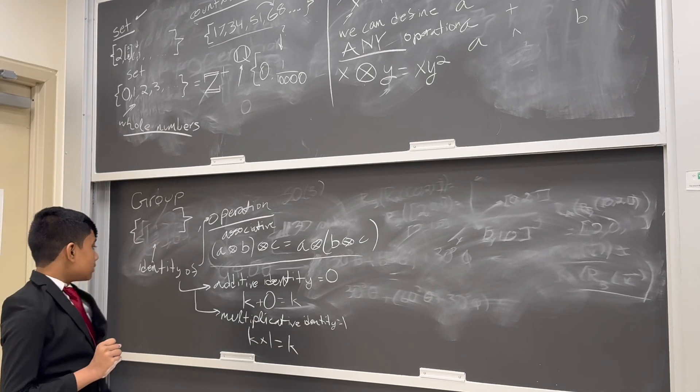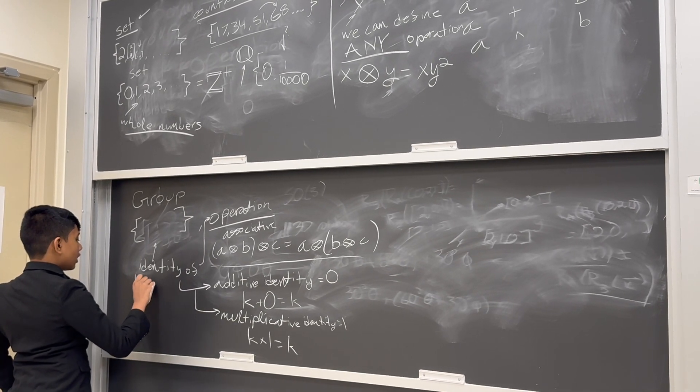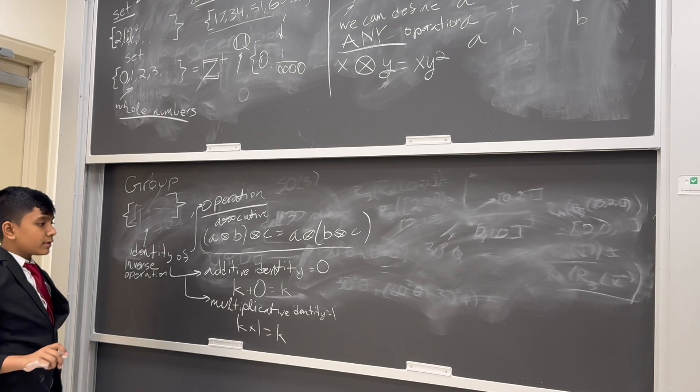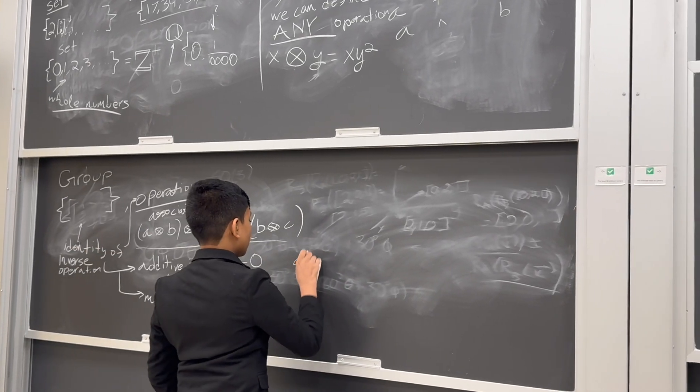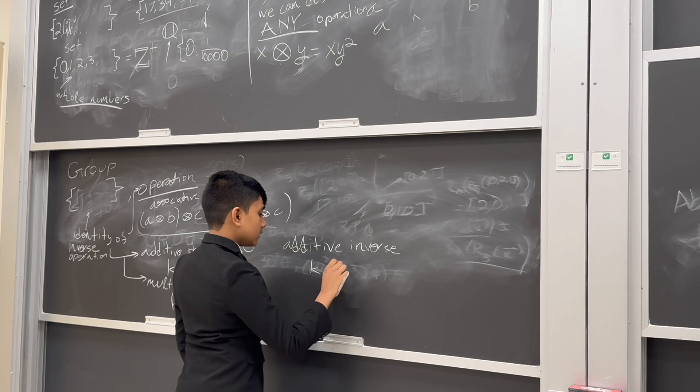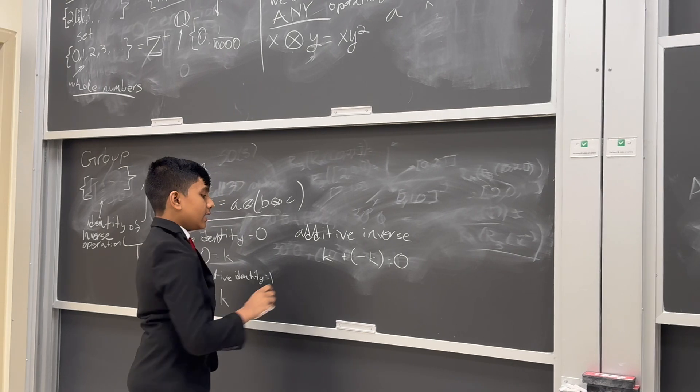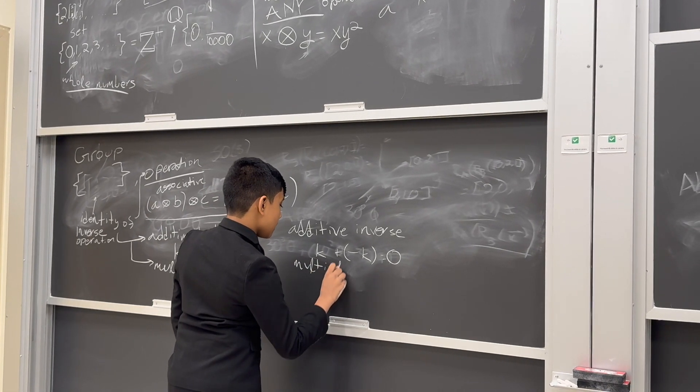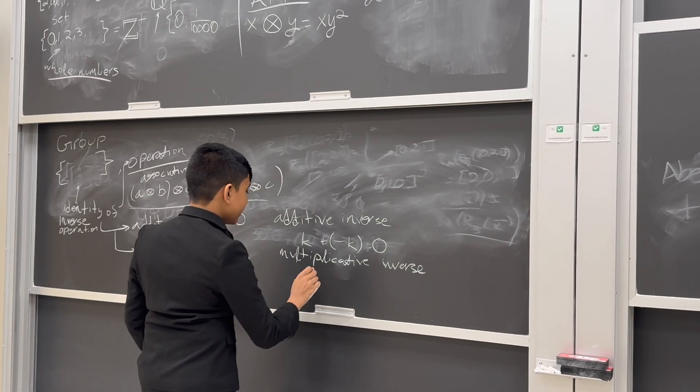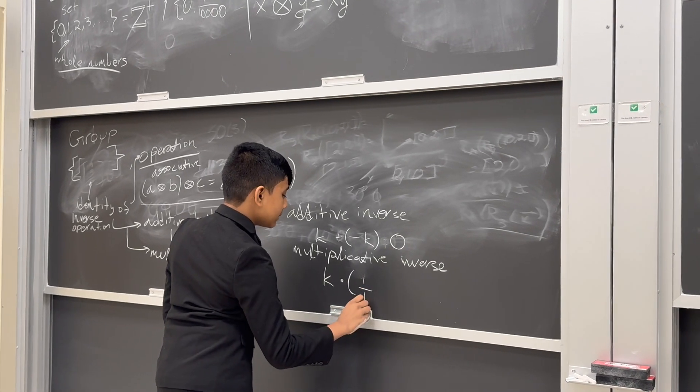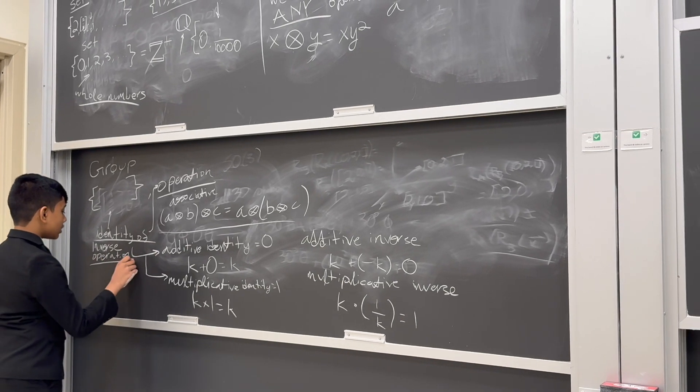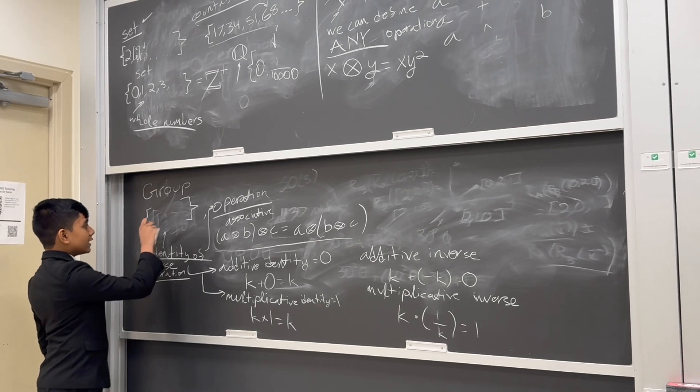Now, it must also contain an inverse for the operation. So, for example, the additive inverse of K was negative K. Because when you add them together, you get the additive identity. And the multiplicative inverse is 1 divided by K. Because when you multiply them together, you get the multiplicative identity, 1. So, it must contain the identity and the inverse of every element existing in the set.